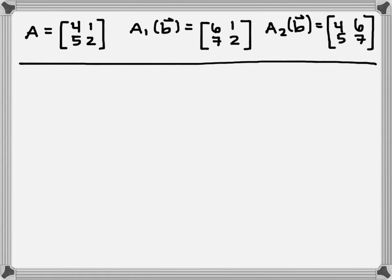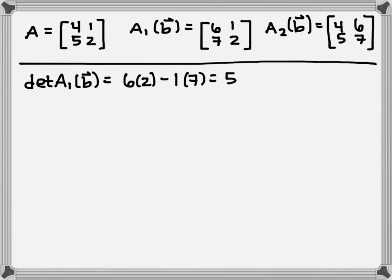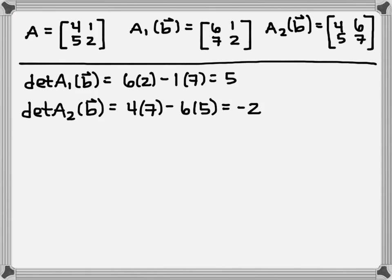Carrying forward to the new slide, we have our matrices A, A sub 1 of B, and A sub 2 of B. Now we want to find all their determinants. For A sub 1 of B: 6 times 2 minus 1 times 7 gives us 5. Remember, forwards diagonal minus backwards diagonal. For A sub 2 of B: 4 times 7 minus 6 times 5 gives us negative 2. And the determinant of A is 4 times 2 minus 1 times 5, which equals 3. With a 2 by 2, it's always forwards diagonal minus backwards diagonal for the determinant.